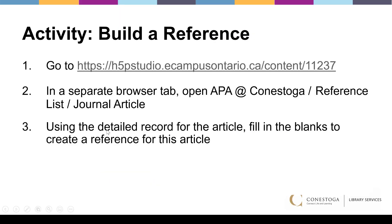Let's try this next activity: Build a Reference. Go to the link listed, and in a separate browser tab open the APA at Conestoga website and go to the reference list journal article section. Using the detailed record for the article we're looking at, fill in the blanks to create a reference.